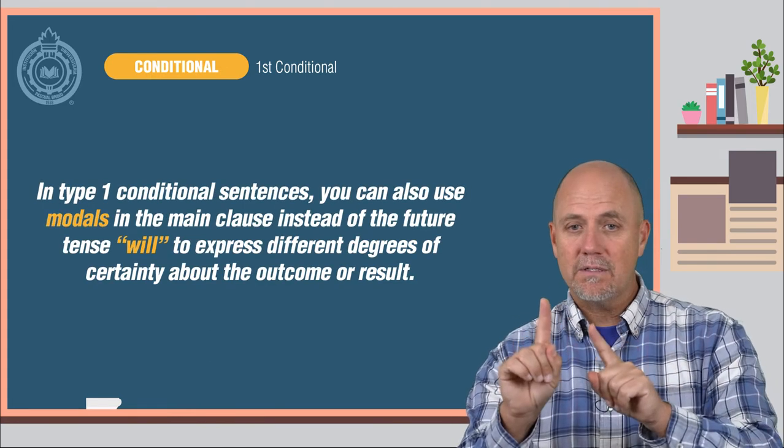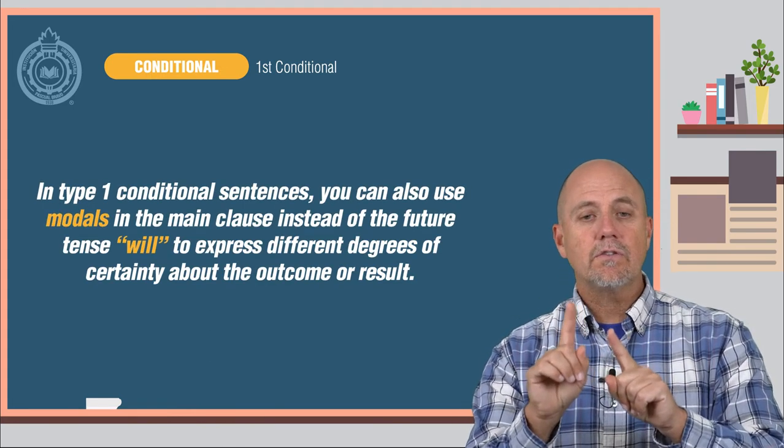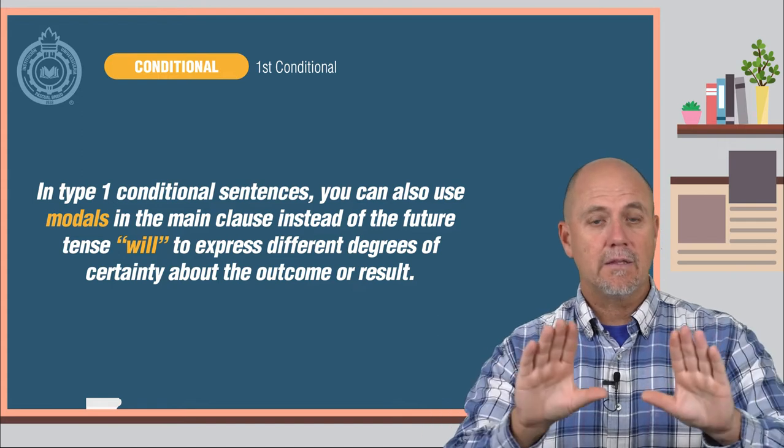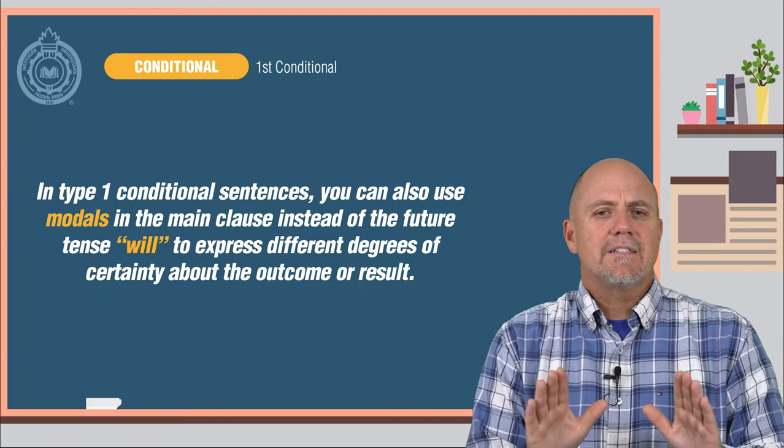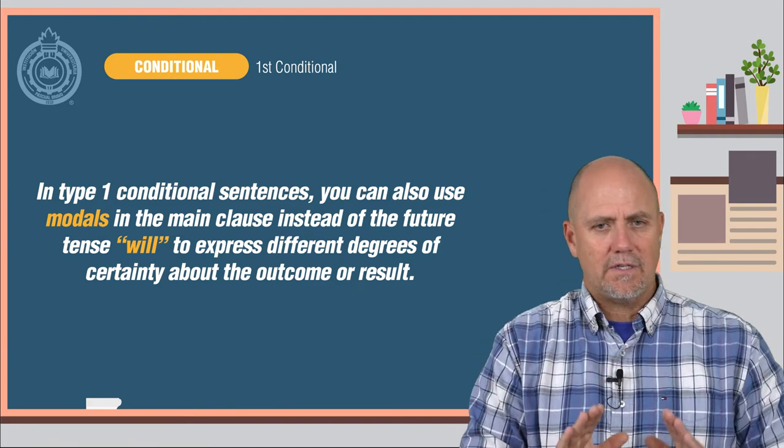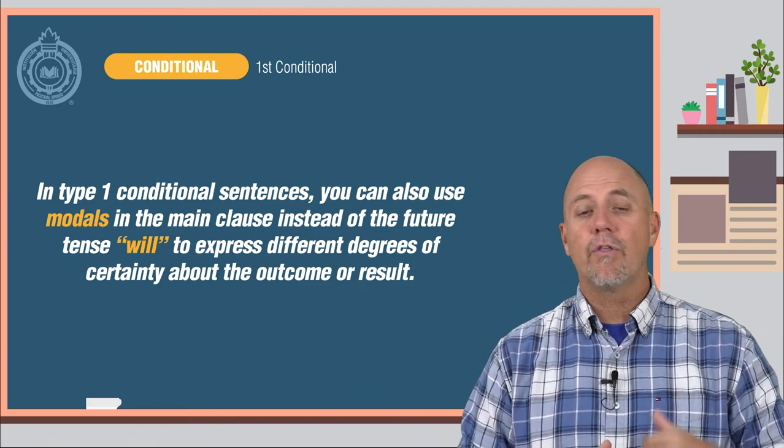Now, in Type 1 conditional sentences, you can also use modals in the main clause instead of the future tense will to express different degrees of certainty about the outcome or the result.